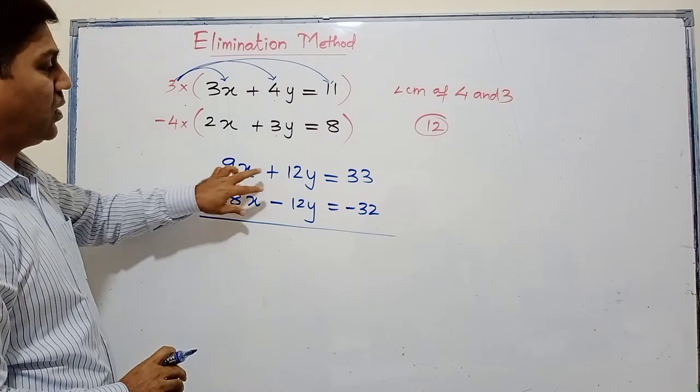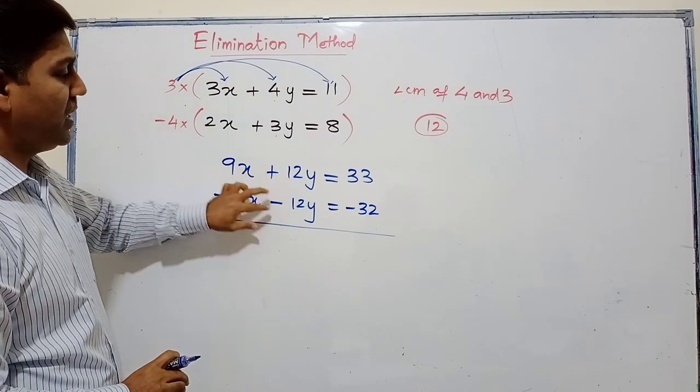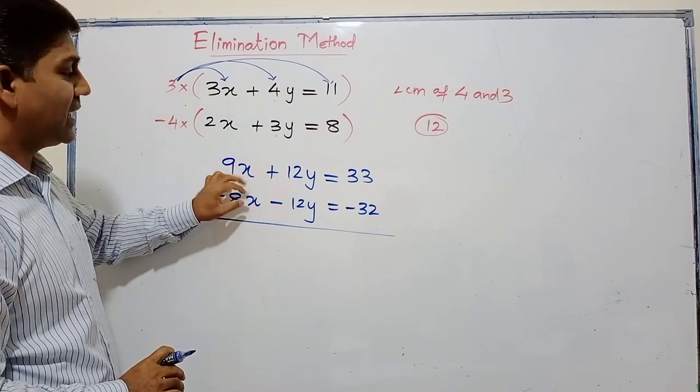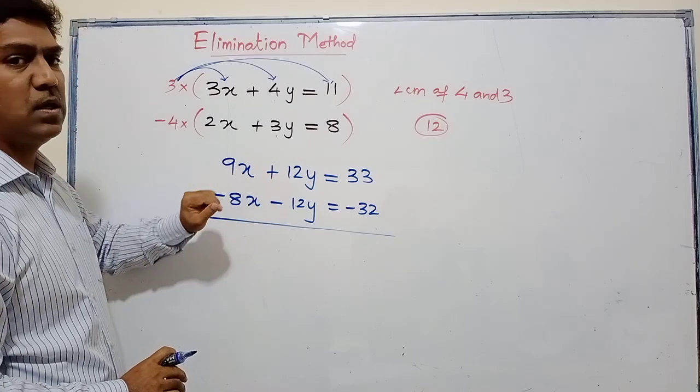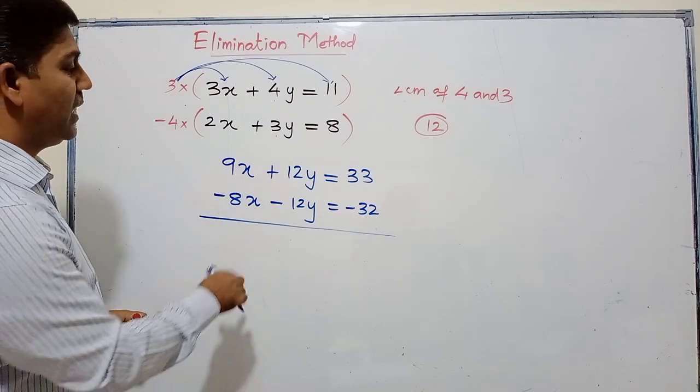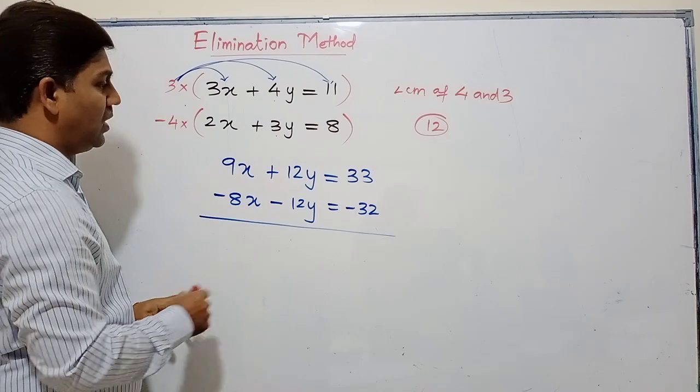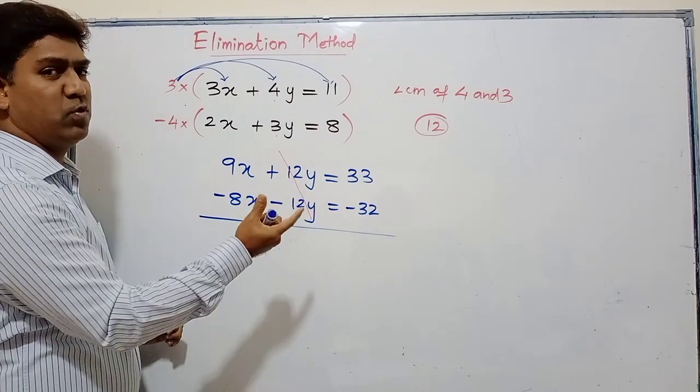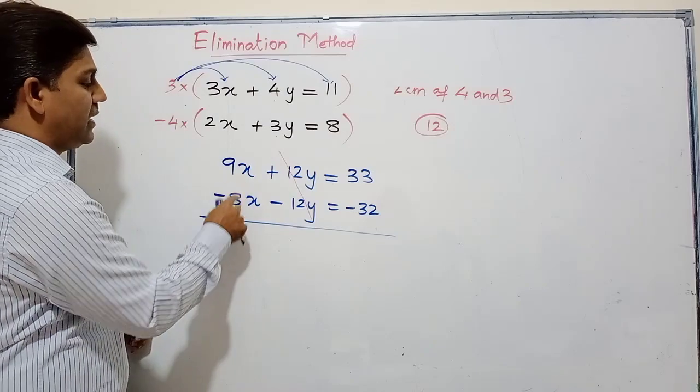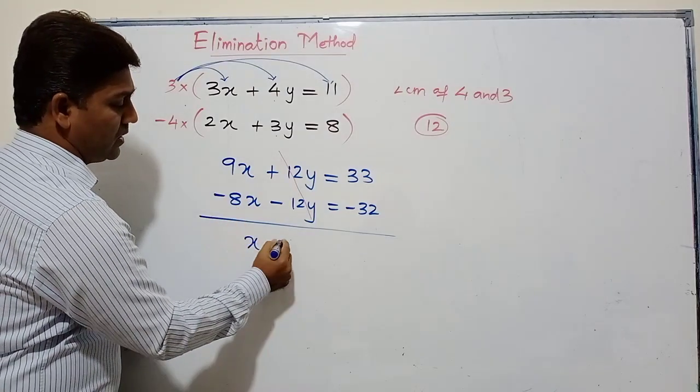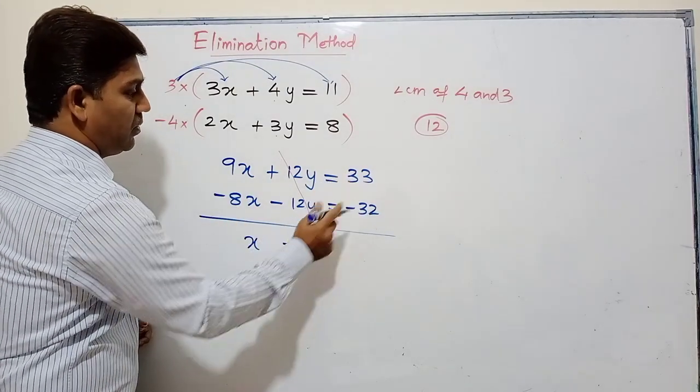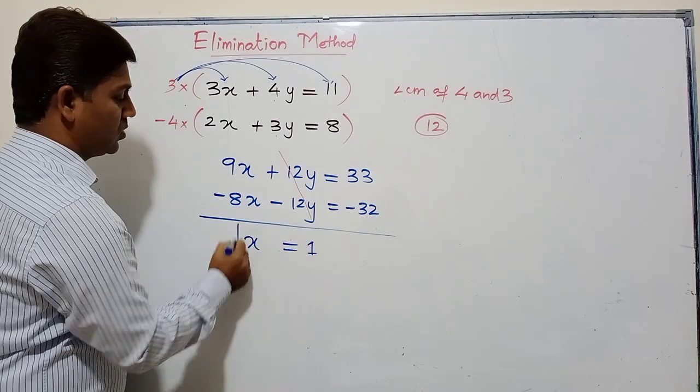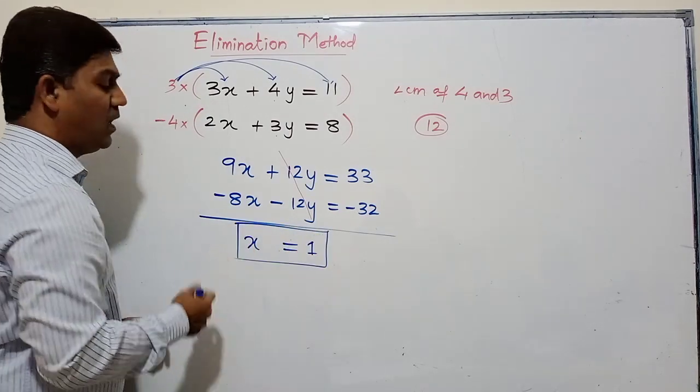Now I have the y coefficients the same and they are opposite - plus 12 and minus 12. When I add them, +12 minus 12 will get cancelled, giving 0y which is 0. And 9 minus 8 gives me x, and 33 minus 32 is 1. So I got x equals 1.